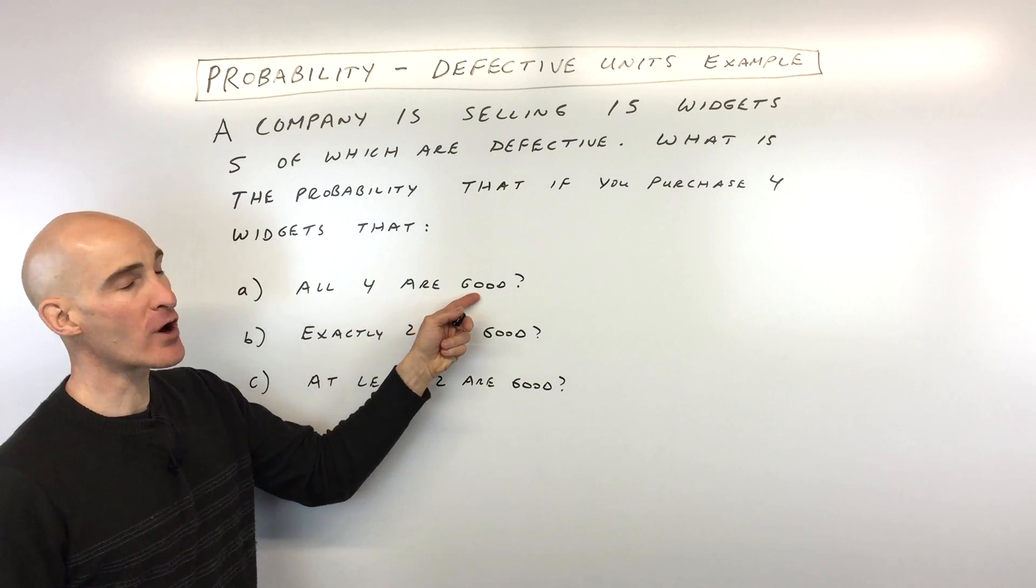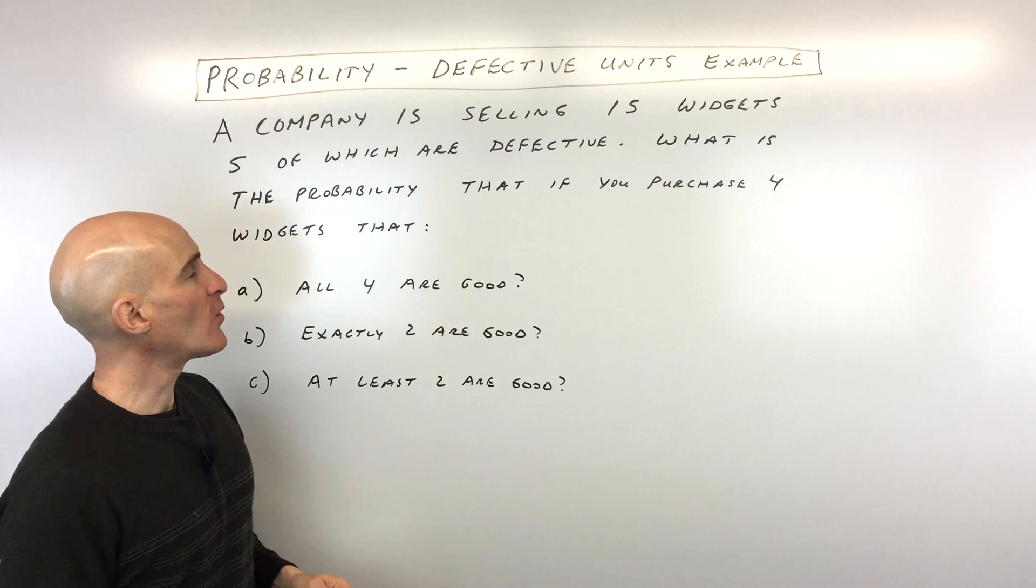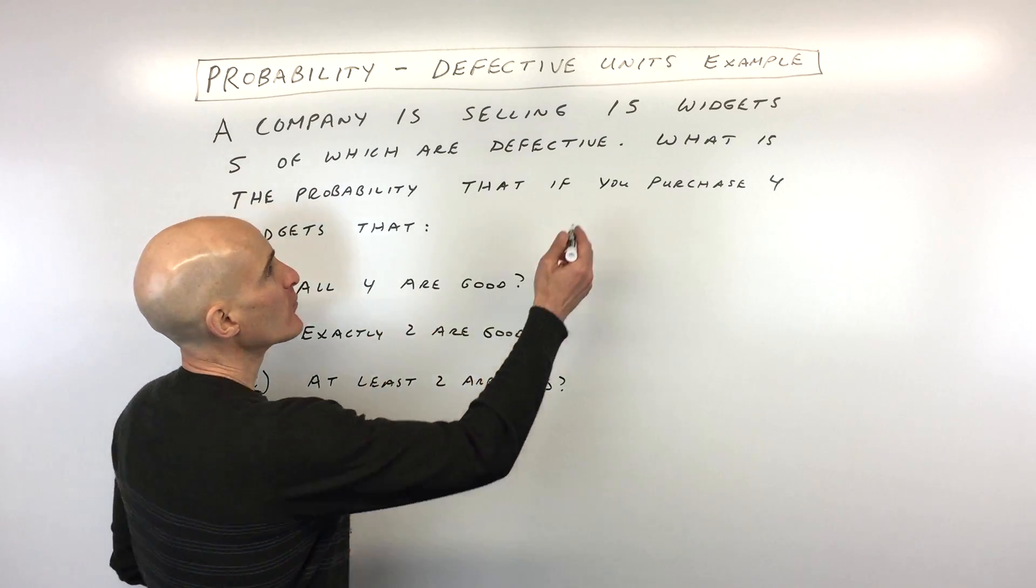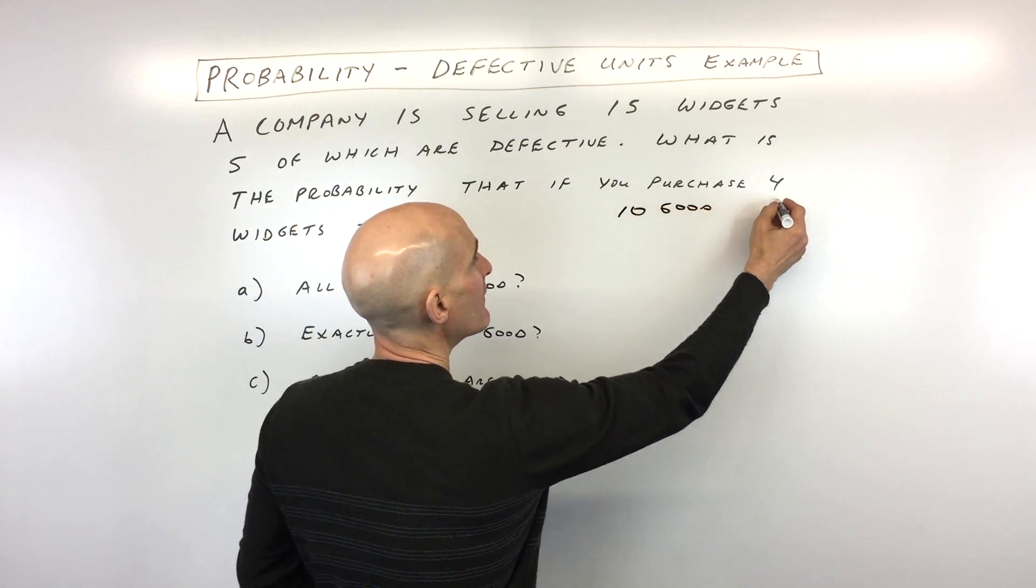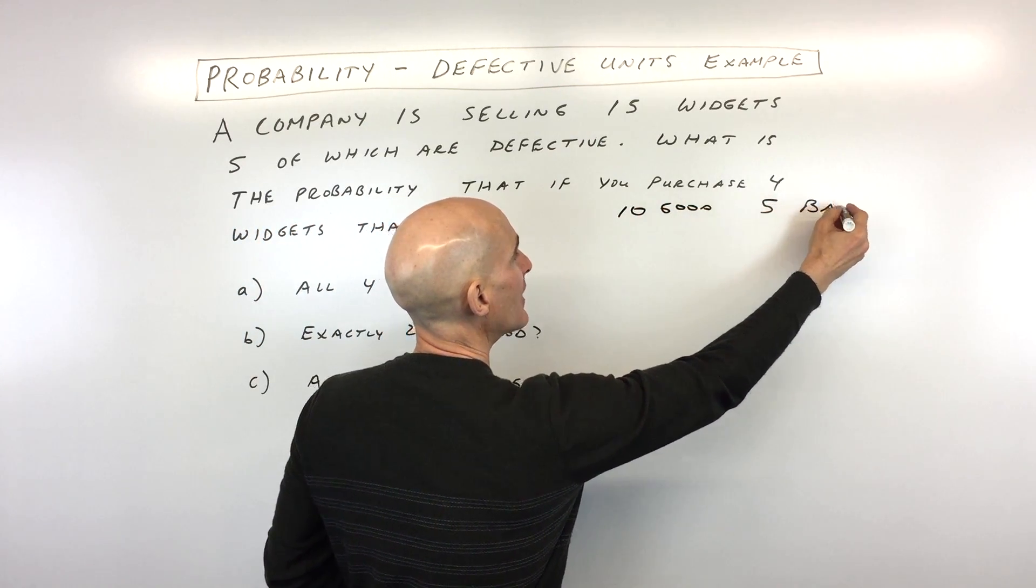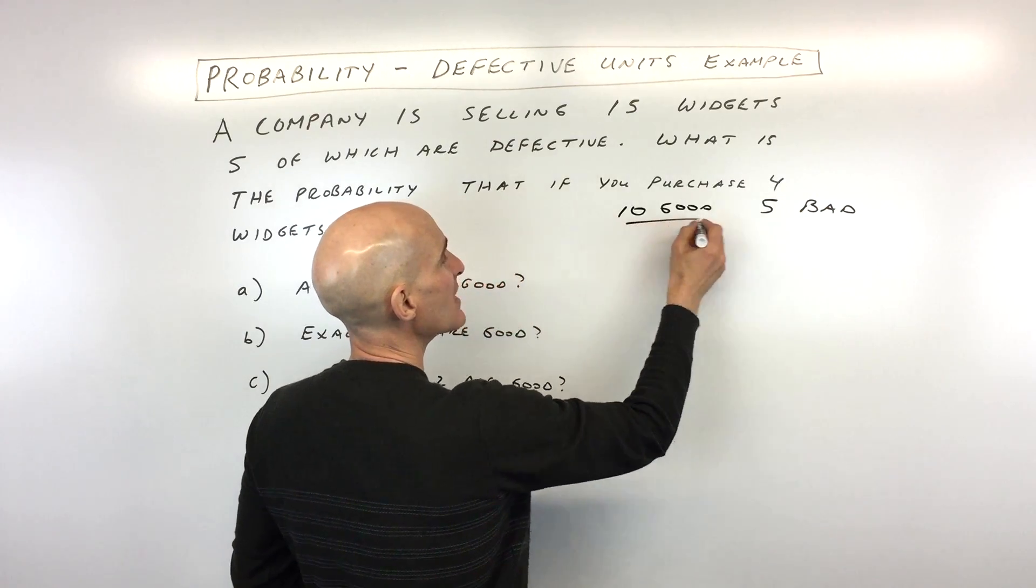So what's the probability that all four are good? Okay, well, the first thing you want to do is you want to figure out how many are good. Well, we know that there's 15 widgets, 10 are good, five we'll just say are bad. Okay, so we got 15 total, 10 good, five bad.